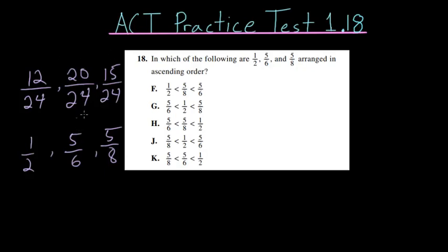So now we can see that 5 sixths is the biggest, and 1 half is the smallest. So that means that choice F is the correct answer.